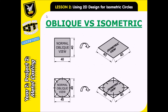We've done this on paper before, so a little refresher about the difference between oblique and isometric. Oblique is when you look at something flat face-on, and when you put it into isometric you're skewing it and looking at it from an angle. If you look at a circle in oblique view it's a circle, but when you put it into isometric it becomes an ellipse.